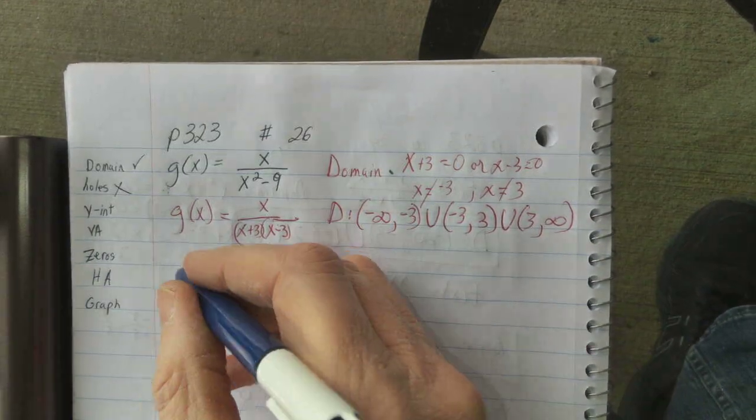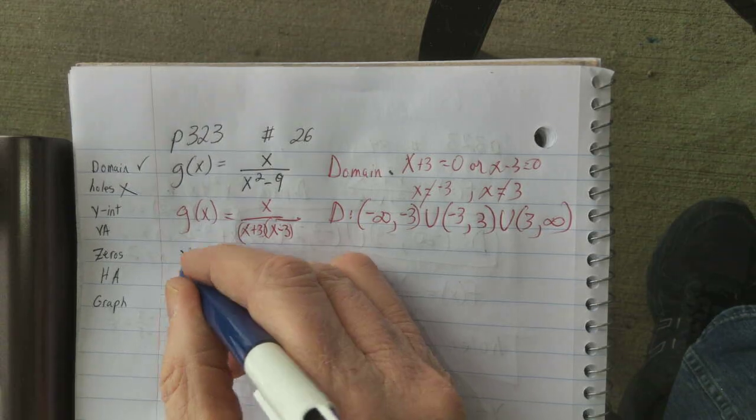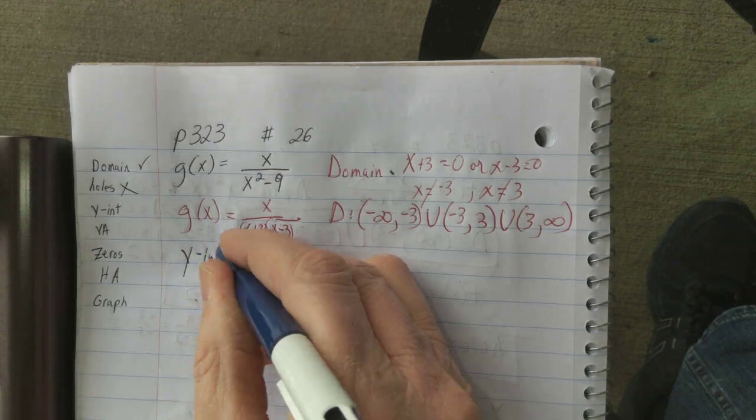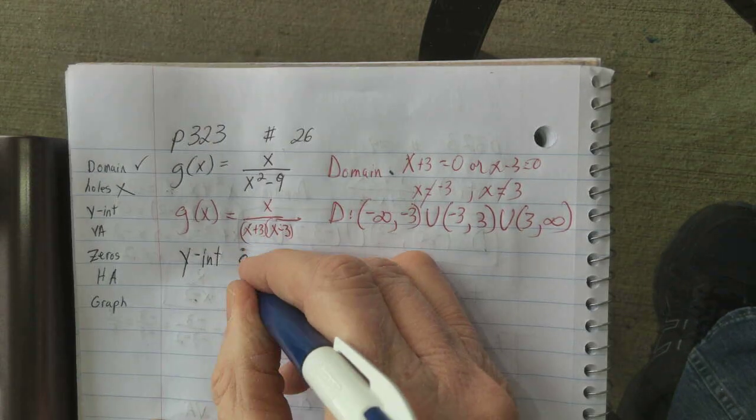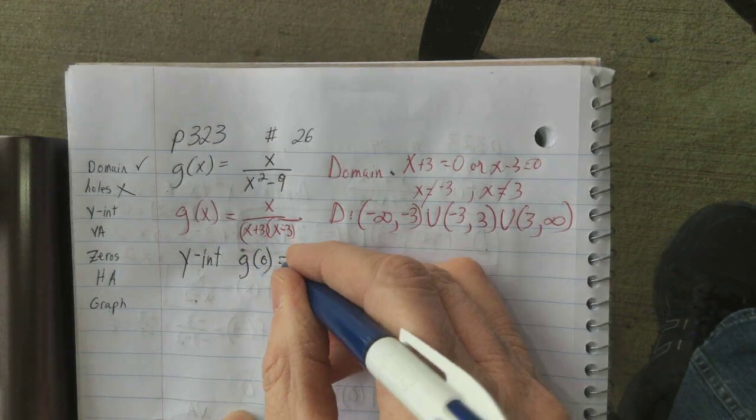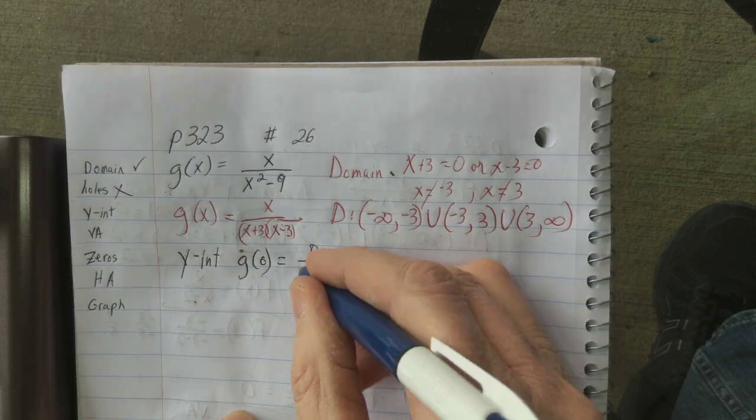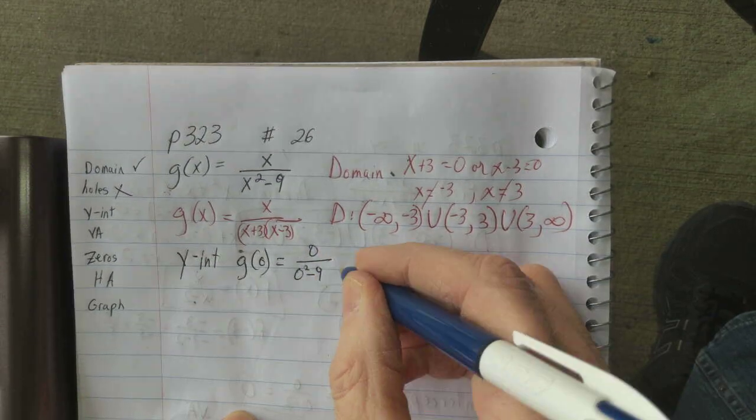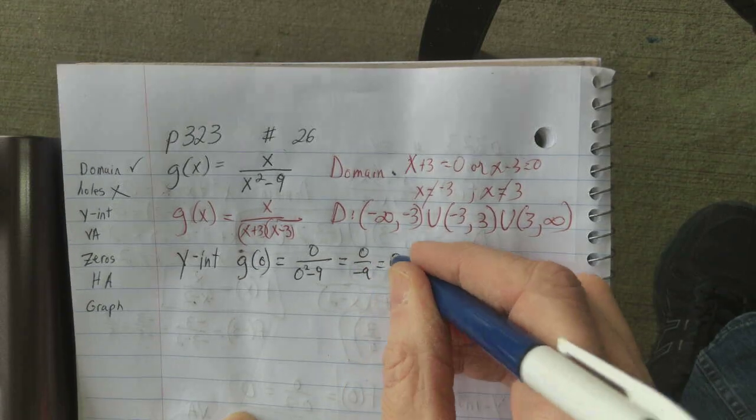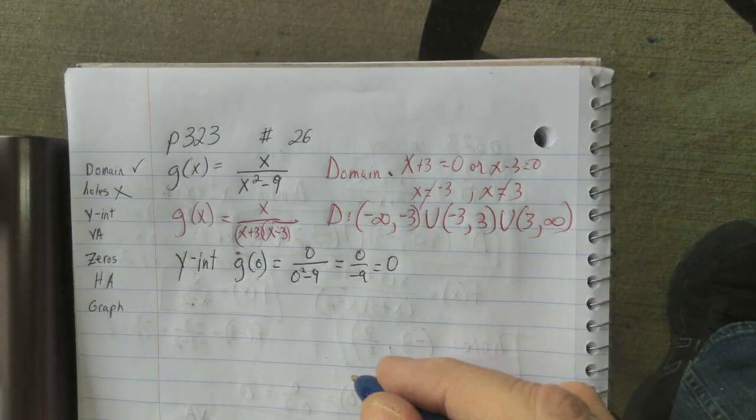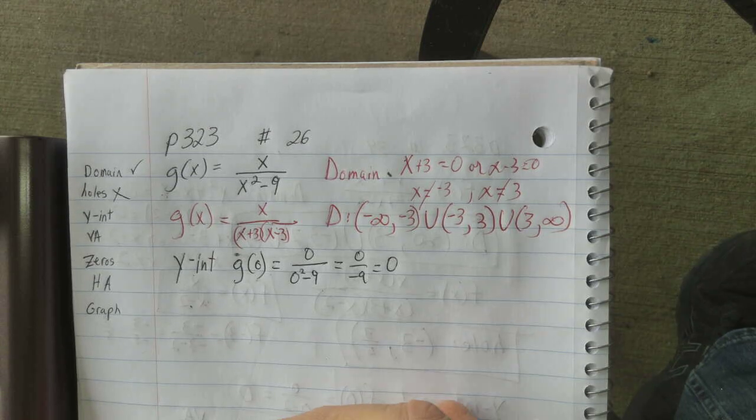The y-intercept, that happens when x is 0. So we are going to find g of 0, which is 0 over 0 squared minus 9. 0 over negative 9 is 0. The y-intercept is 0. So this thing is going through the origin.